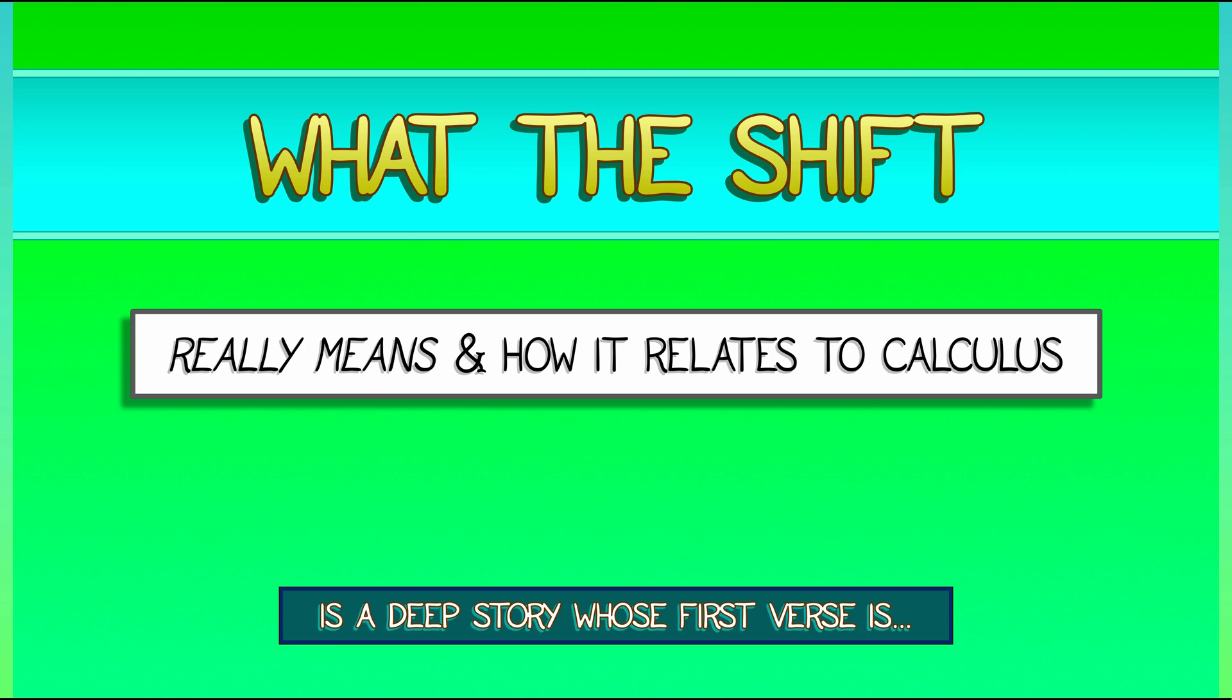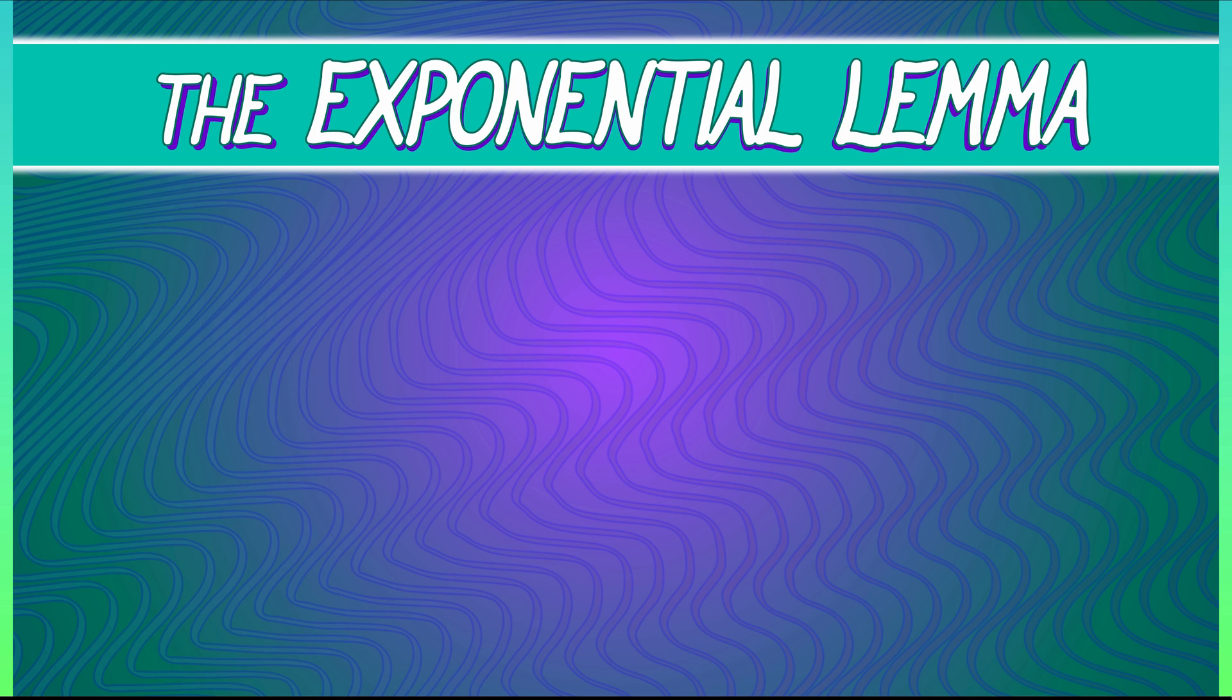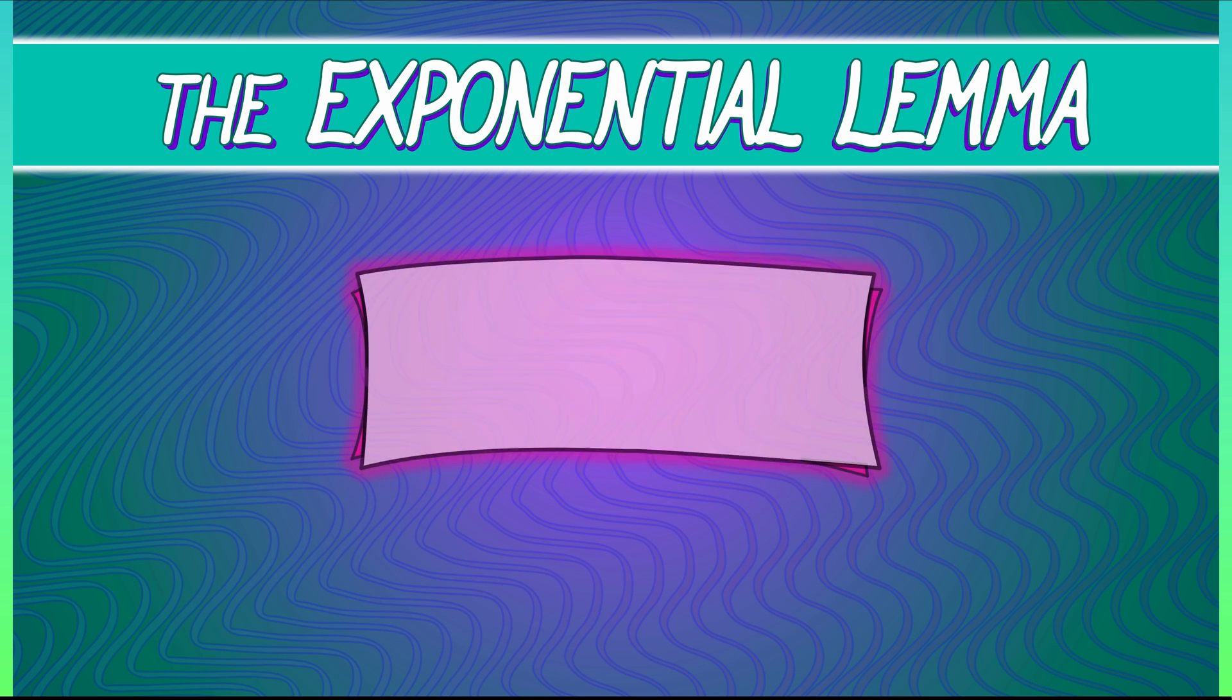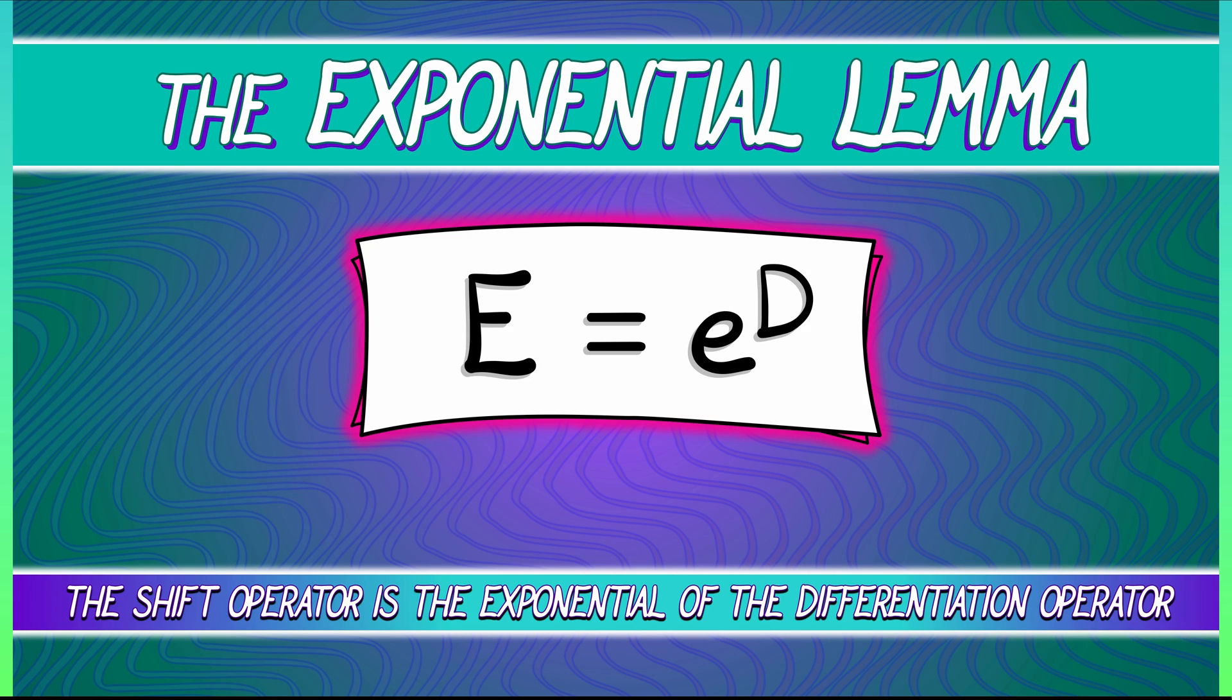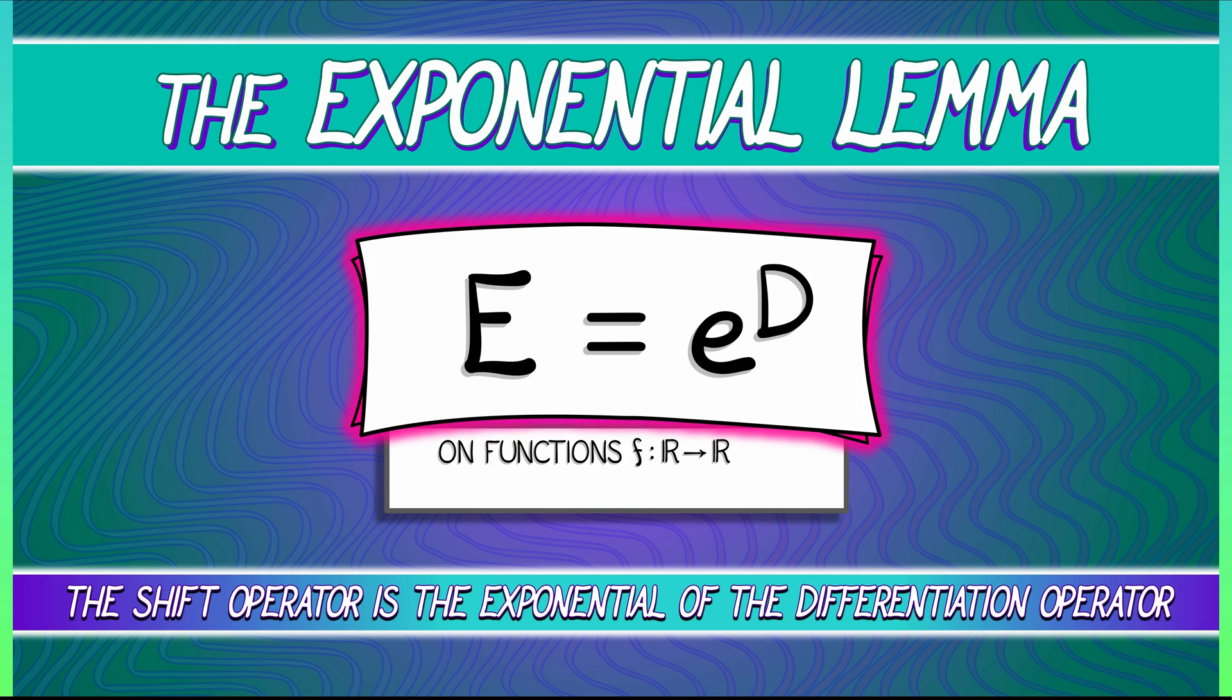Now, what the shift operator really means, how it really relates to calculus—oh, that's a deep story, but it's a great story. We can't do the whole thing, but we can do the beginning. The beginning is beautiful and consists of something that I call the Exponential Lemma. This is one of my favorite theorems, and it states that the shift operator capital E is e to the D. What does that mean? It is the exponential of the differentiation operator. Is there some fine print here? Yes, you need to have functions—one input, one output—with a well-defined Taylor series.